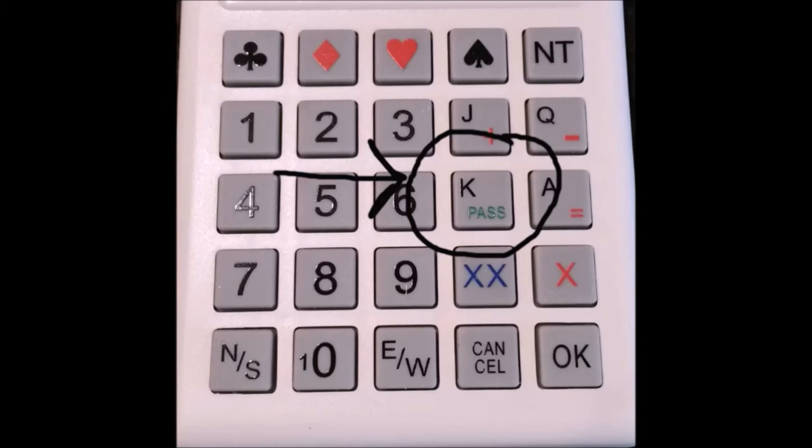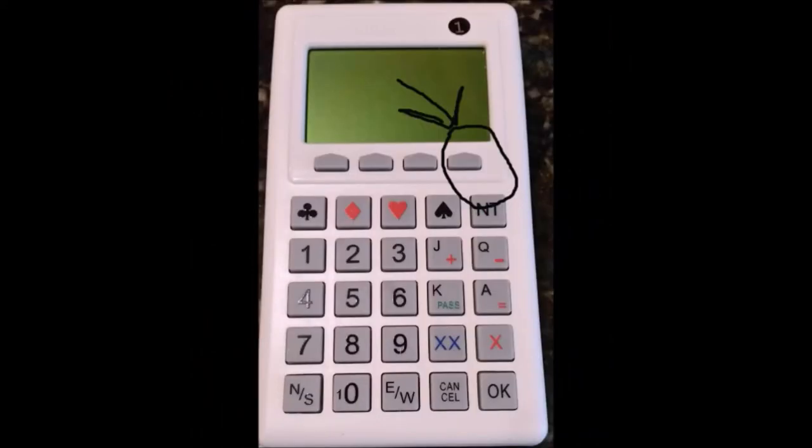Another area of concern is the accept button. Now, as I told you earlier, after North puts in the contract, East-West has the option to either accept or reject it. The accept key is not the OK key. It's in a little different place. And it will say accept over it. If you look at the upper right-hand corner, that's where the accept key is.